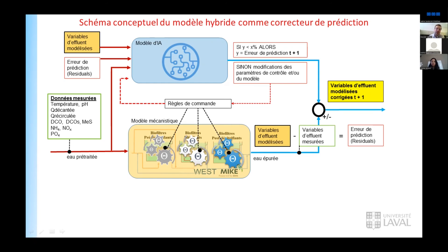This information will serve as a correction factor to the process model, shown on the right side of the screen, thereby making the final corrected output more accurate and reliable. The hypothesis is that combining these two components into a hybrid model will increase the accuracy of predictions and make model simulations more reliable, raising their implementation in real-time process control systems for decisive control.